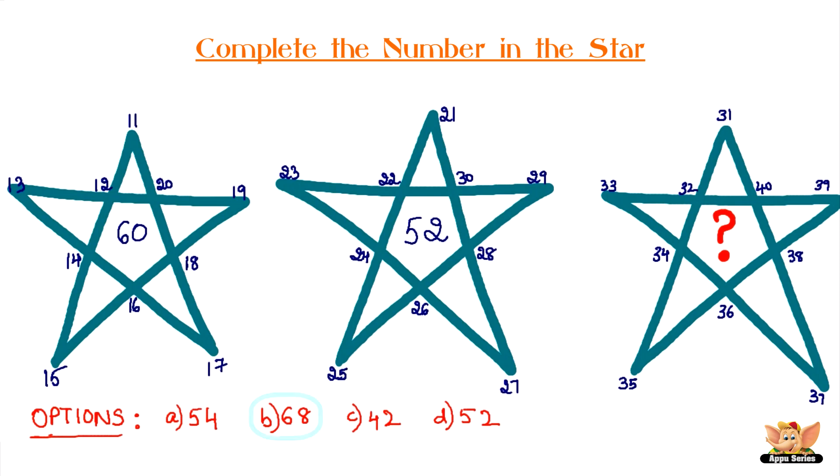Answer is B. 68. Add all the prime numbers in each star. 11 plus 13 plus 17 plus 19 equals 60. 23 plus 29 equals 52. 31 plus 37 equals 68.